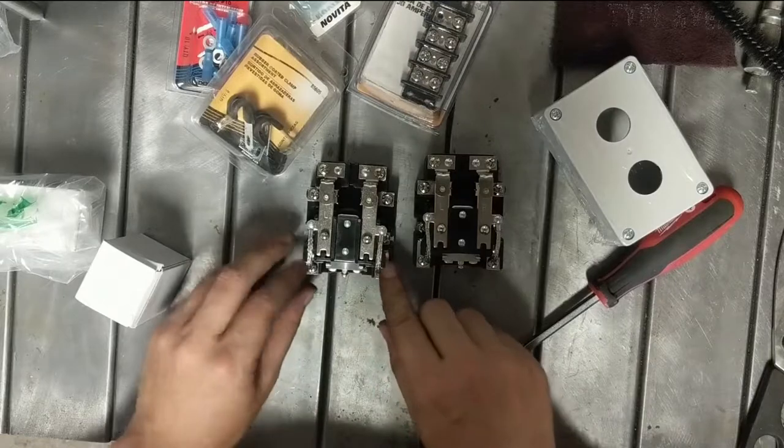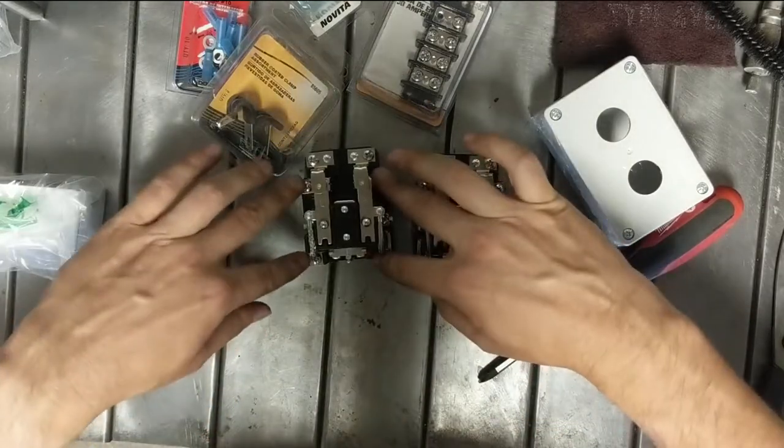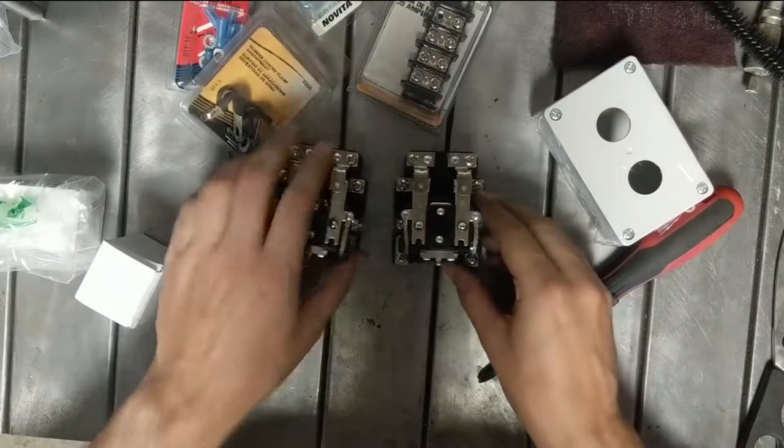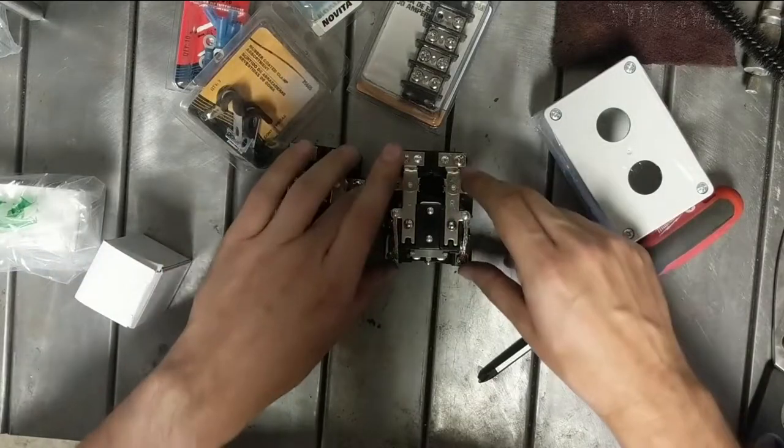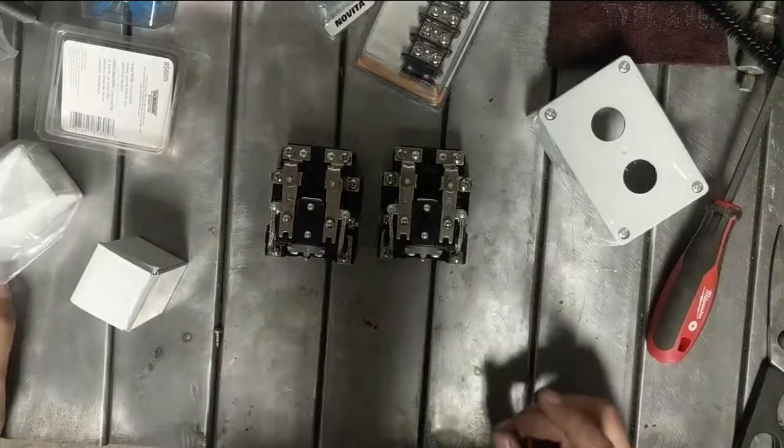What we're going to do is use the normally open contacts on one relay to make up our phase voltages, and we're going to use the combination of normally open and normally closed to make that reversing action.